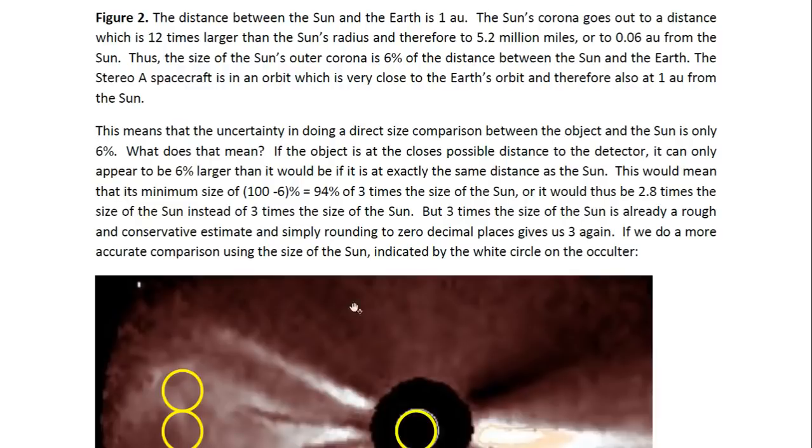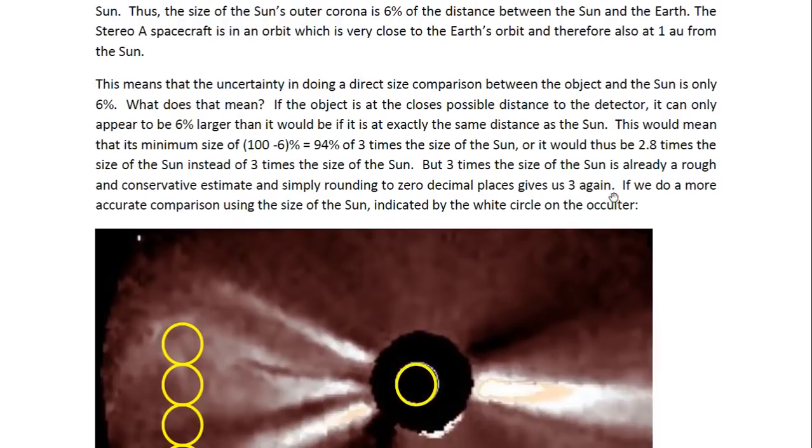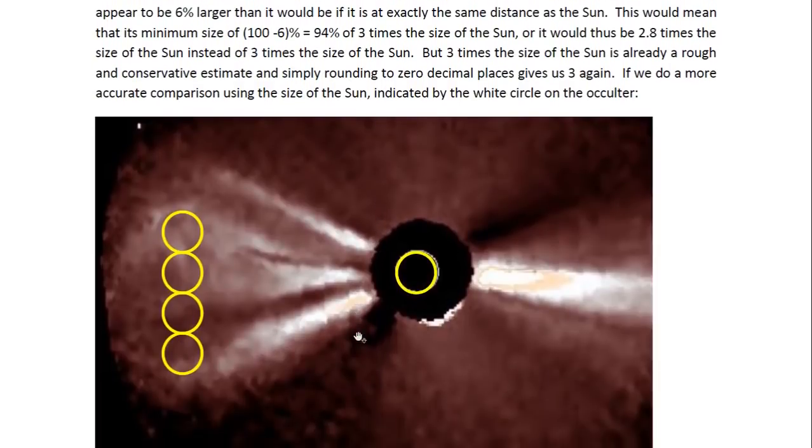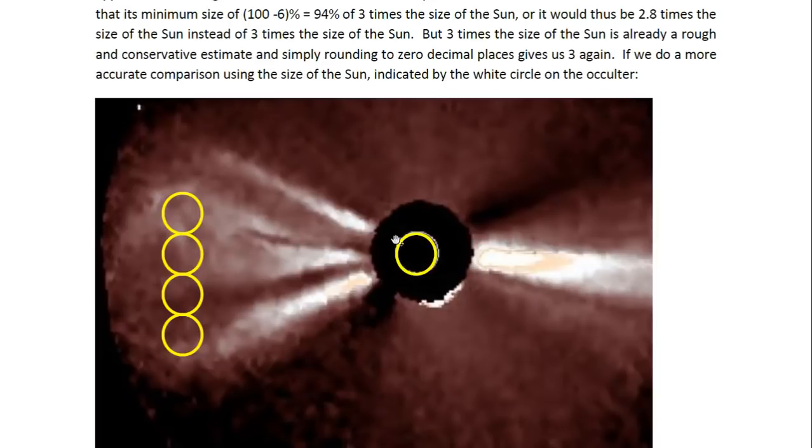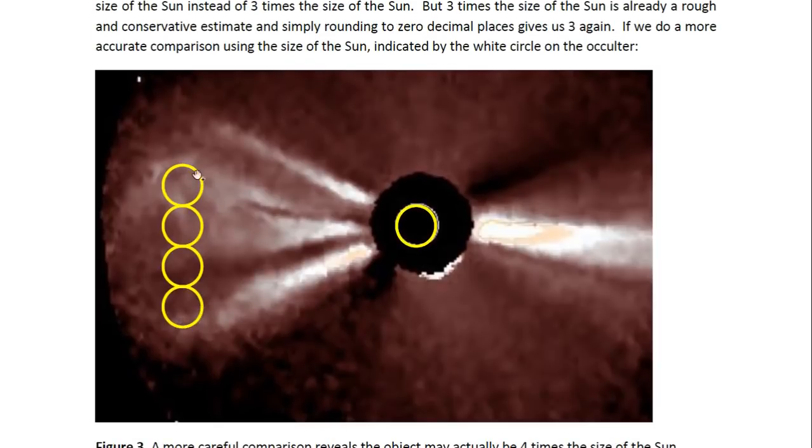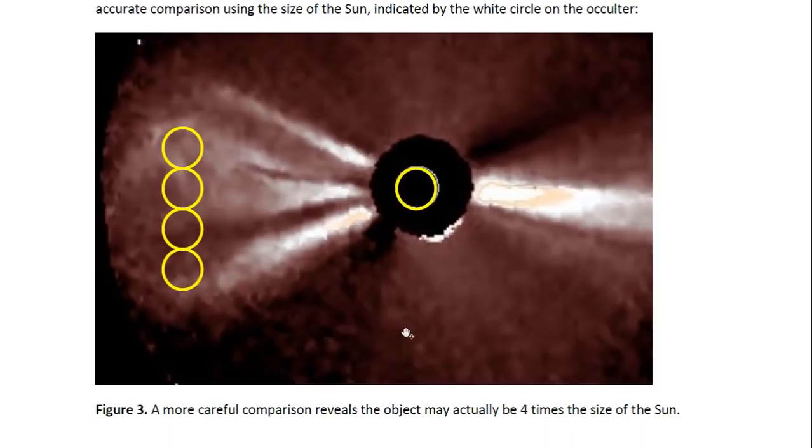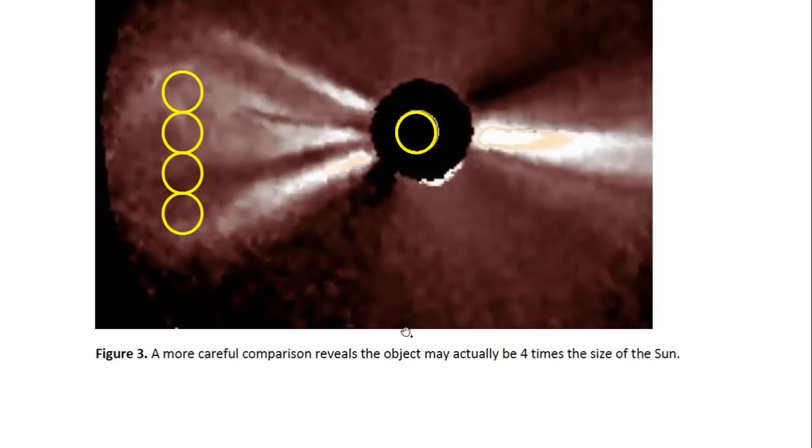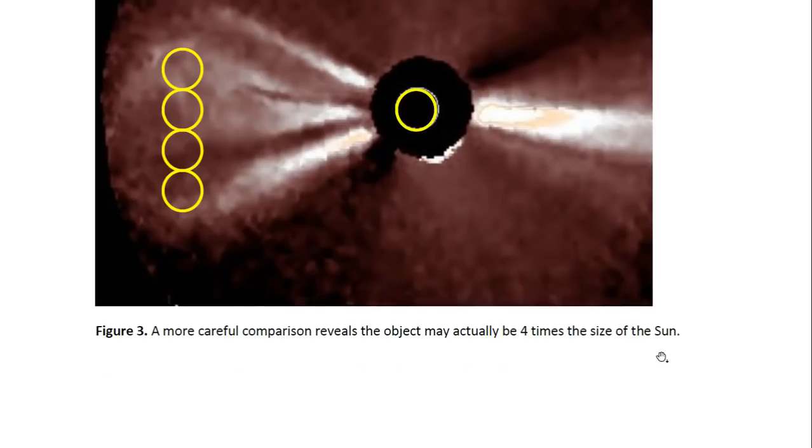But if we do a more accurate comparison, because this is a very rough estimate that I did here, we can actually do a more accurate comparison. And what we do is we draw a circle that's the same size as that occulter, and then we place them side by side in order to estimate the diameter of the object. You can see at least 4 of these circles fall within the diameter of this object, which means that a more accurate estimation of its size would mean that it's about 4 times the size of the Sun, not 3.